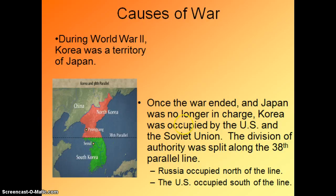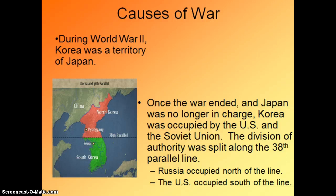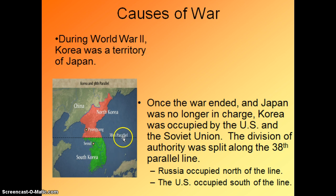Now, the causes of the war. There's a lot that goes into this war. During World War II, Korea was a territory of Japan. In the early 1930s, Japan conquered Korea and tore it apart, so for about 15 years Korea had no government — it was a territory of Japan. When the war ends and Japan loses all of its territories, Korea has to set up its own government again. At that point, Korea is occupied by the United States and the Soviet Union. The Soviet Union invades from the north and takes over what is now known as North Korea. The United States moves their military up from Japan and conquers what is now South Korea. They are divided along a line of latitude called the 38th parallel.